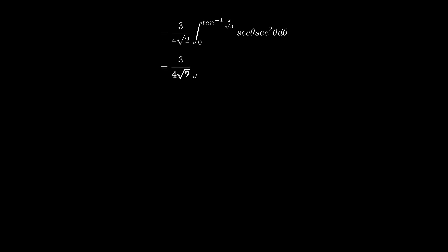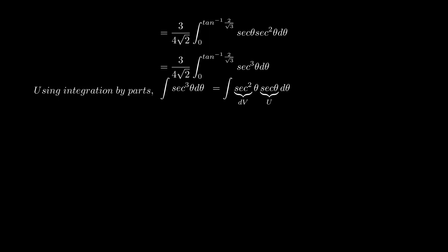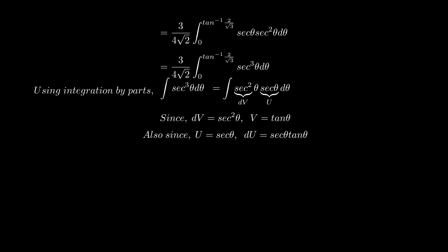To integrate sec cubed θ, we split it into two parts using integration by parts, equating sec squared θ to dv and sec θ to u. Since dv equals sec squared θ, v equals tan θ, and since u equals sec θ, du equals sec θ tan θ — the derivative of sec θ. Knowing that the integration by parts formula gives u·v minus the integral of v·du.